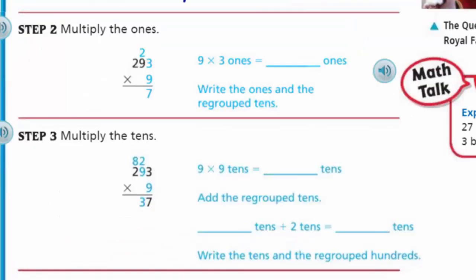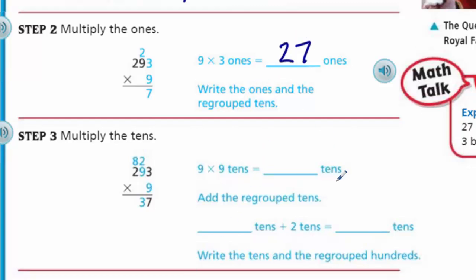Let's look at step 2. Step 2 says multiply the ones. We're going to multiply the 9 times 3 in our real problem. Now we did our estimate — now we're moving on to actually multiply, doing what we call the algorithm. We take 9 times 3, which is the ones, which is equal to 27 ones. Now, you can only have up to 9 in the ones place and then you regroup. That number 2 up there — we're regrouping the 2, which is a 10, and it needs to be in that column. Otherwise it can mess up our answer.